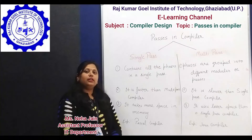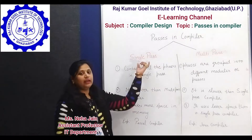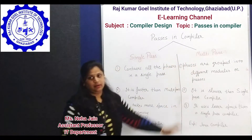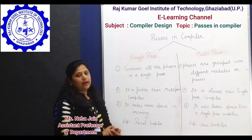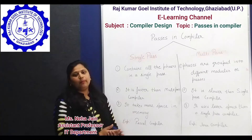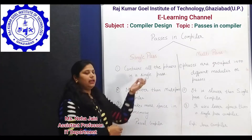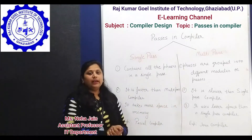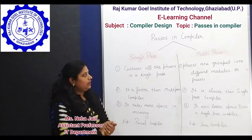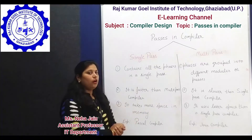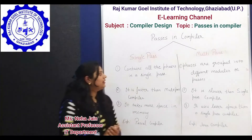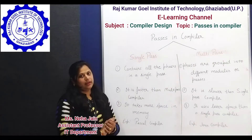We can implement a compiler as a single-pass compiler or a multi-pass compiler. Both are types of compilers. Whether to use a single pass or multi-pass can be decided by the environment in which a compiler must work, or by the structure of the source language.